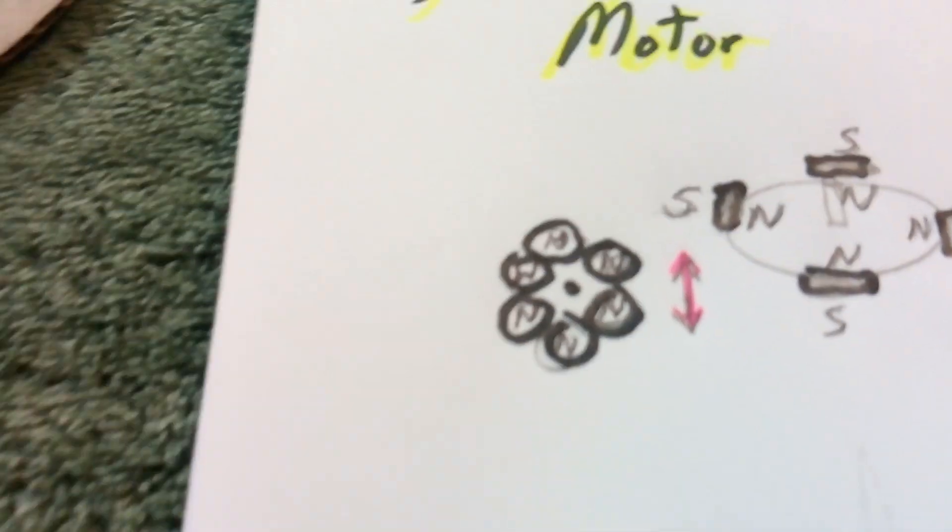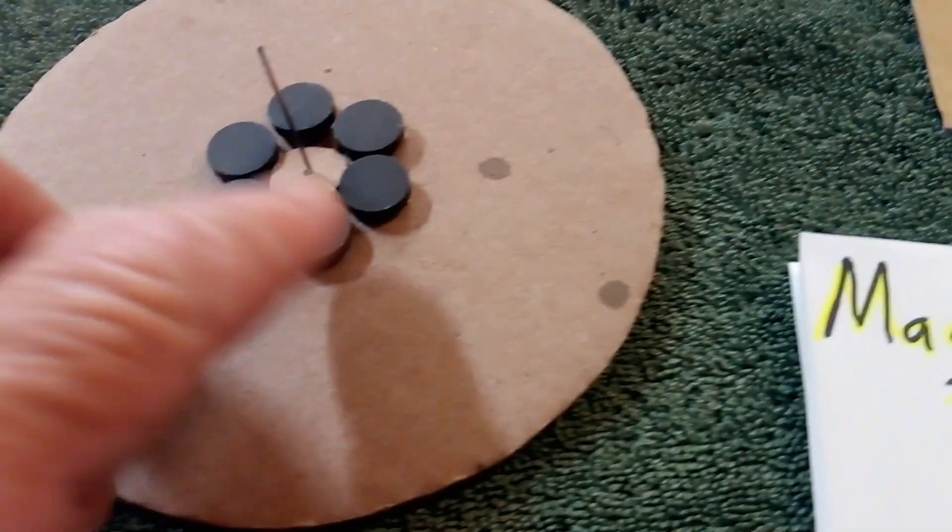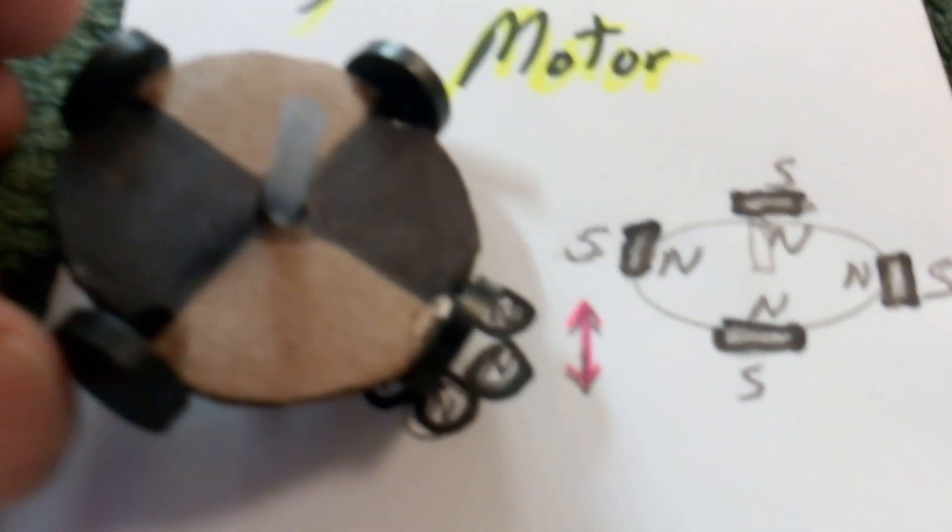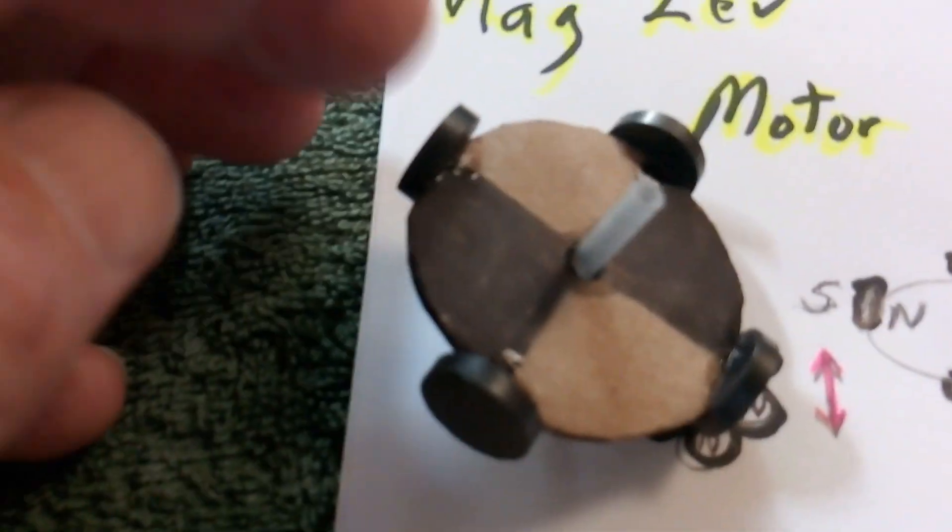Here's how it's set up. It's set up with all north on the base, these are all north facing. Then on the rotor you've got north on the inside and south on the outside like that. These are south and then north all the way around.